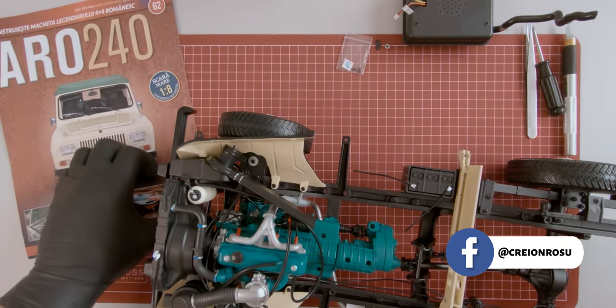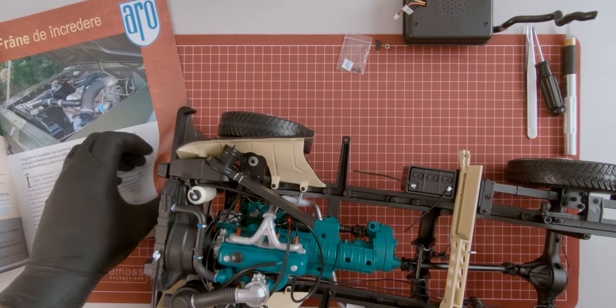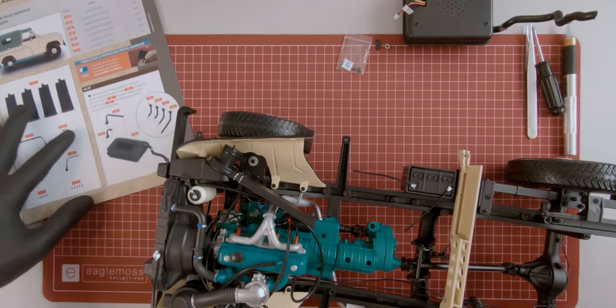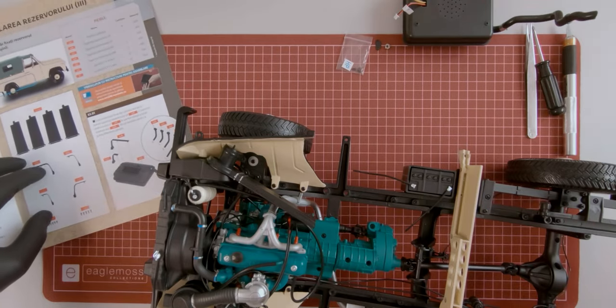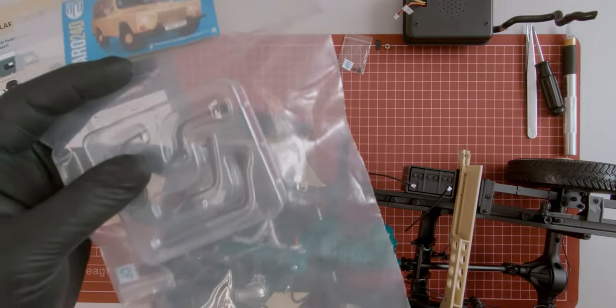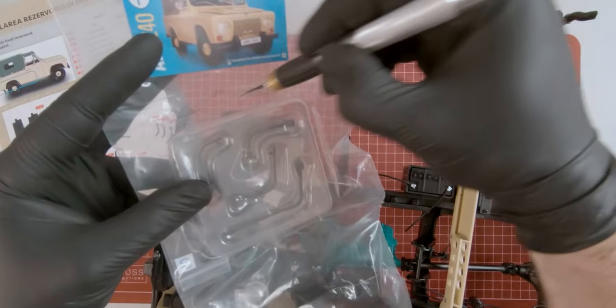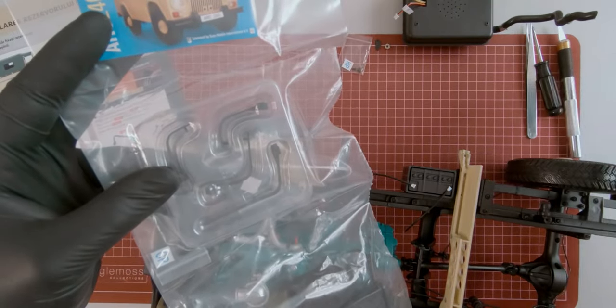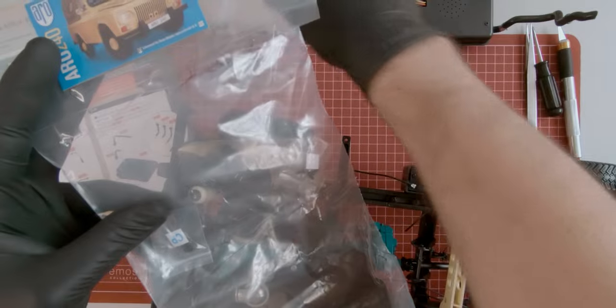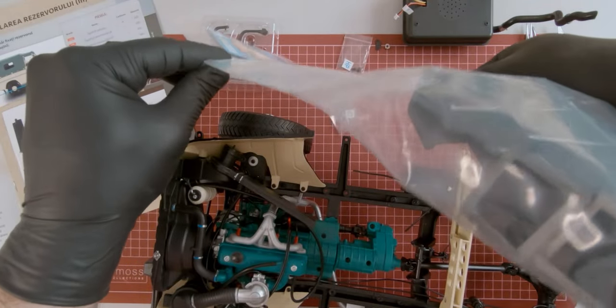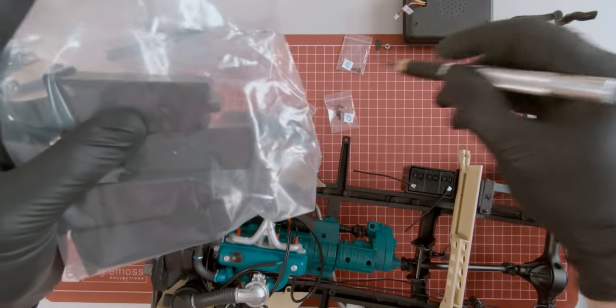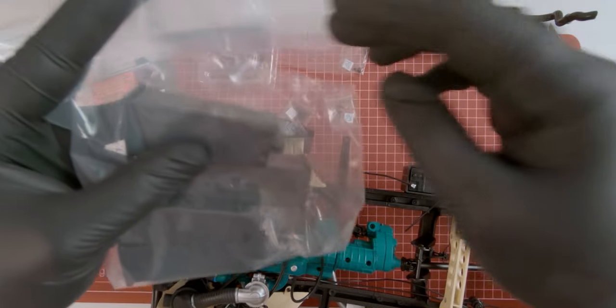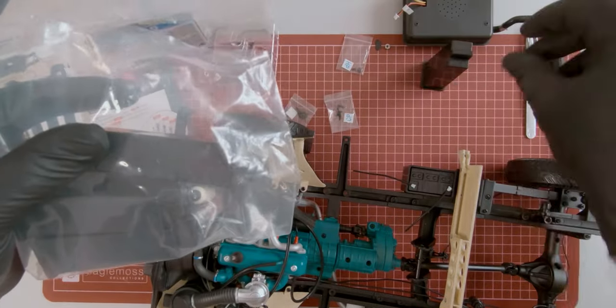So with magazine 62, these are the components that were sent.